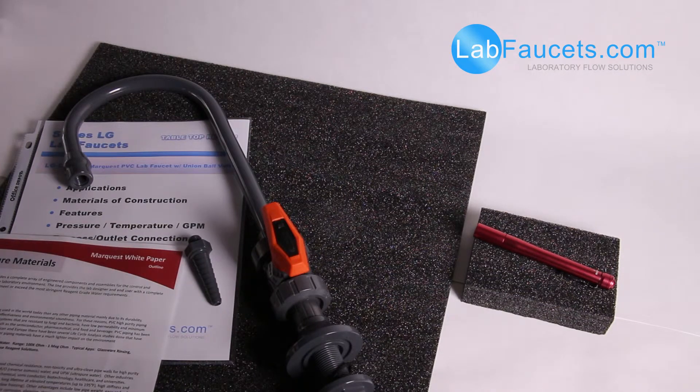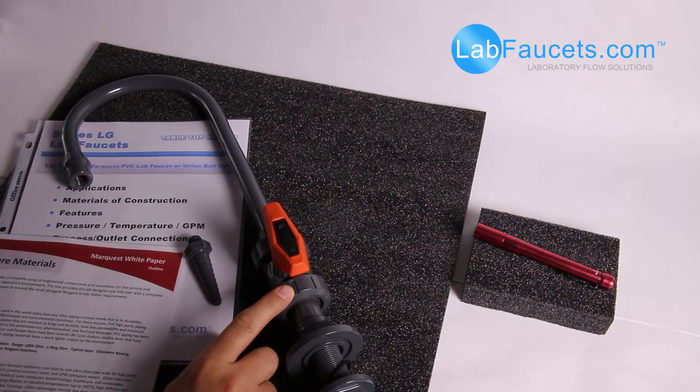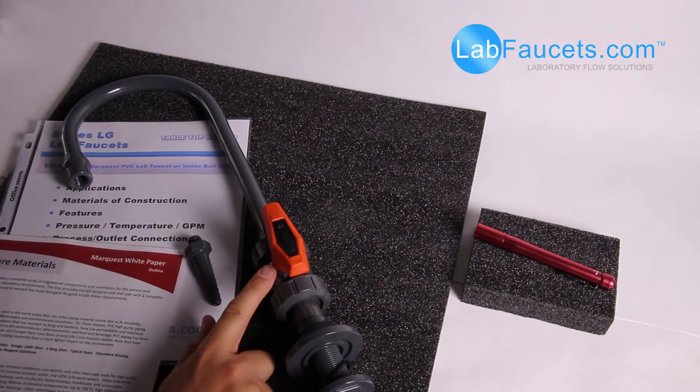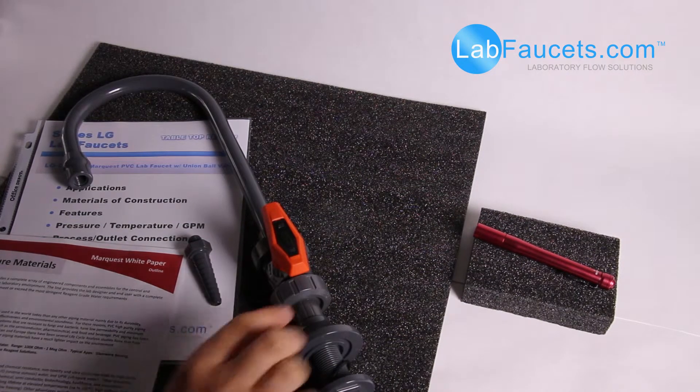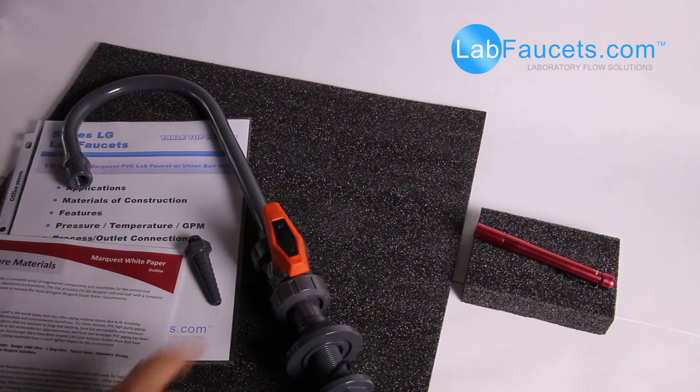Well that ends our LabFaucets.com tabletop review of the Marquest Scientific PVC lab faucet with a quarter turn rugged union ball valve, which also, just as a side note here, allows you to, if you ever do have an issue with the valve body, it can be replaced. As you see here, we have two union nuts and that body can be replaced.